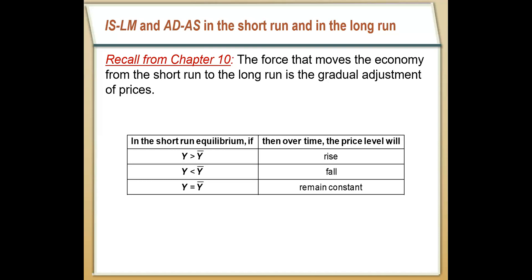So remember from Chapter 10 that if our total output in the short run is greater than our long run aggregate supply, then over time the price level is going to have to rise to bring us back to our potential output, our Y bar. Similarly, if our total output is below potential, eventually price levels are going to have to fall, bring us back to potential. And if our short run output is already at our potential output, then the price level will remain constant over time.